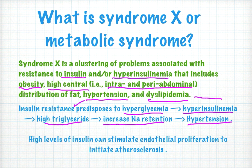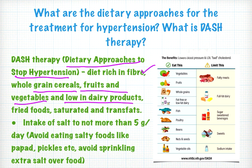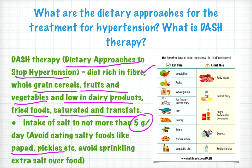High insulin levels can also stimulate endothelial proliferation to initiate atherosclerosis. DASH therapy — Dietary Approaches to Stop Hypertension — is a diet rich in fiber, whole grain cereals, fruits and vegetables, and low in dairy products, fried foods, and saturated and trans fats. Salt intake should not exceed 5 grams per day. Avoid salty foods like pickles, avoid sprinkling extra salt on food, and avoid smoking and alcohol.